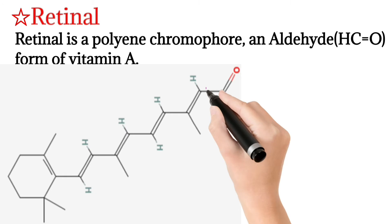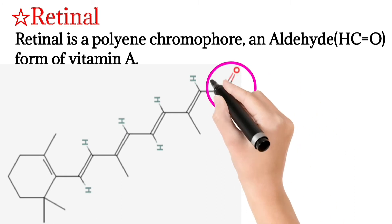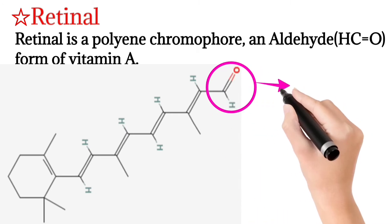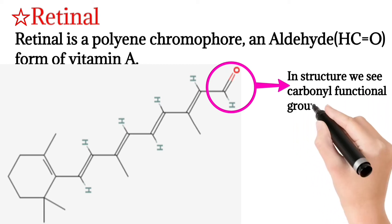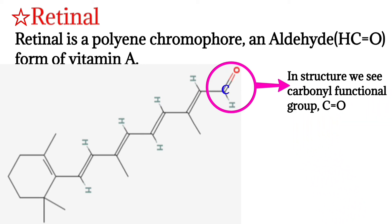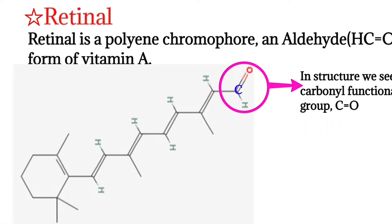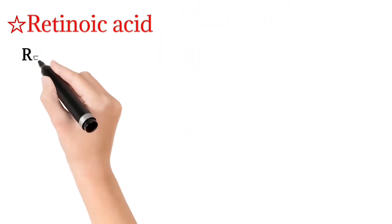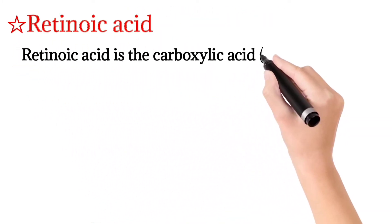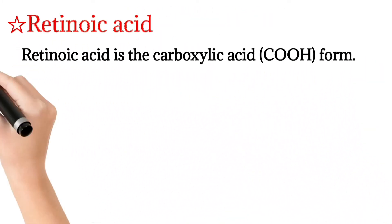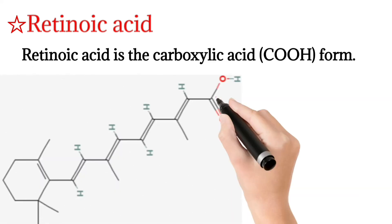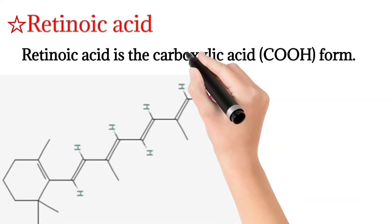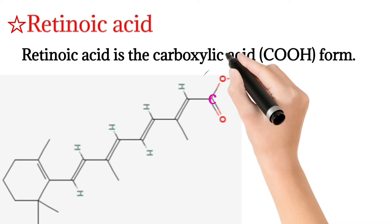Retinal is a polyene chromophore in the aldehyde form of Vitamin A. In the given formula of retinal, at the end we see a structure which is a carboxaldehyde functional group. Retinoic acid is the carboxylic acid form of Vitamin A — in its formula, at the end is attached a carboxyl group.